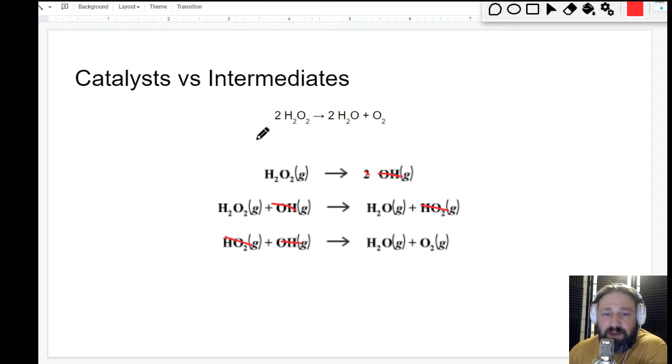And what else? This H2O2 is created and then used up. Everything else is good—we have two hydrogen peroxides, two waters, and one O2. So there you go, this is a good example of a mechanism which has intermediates.